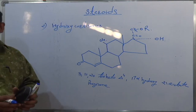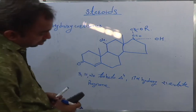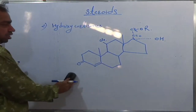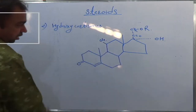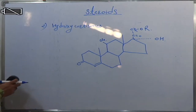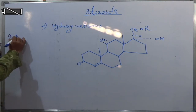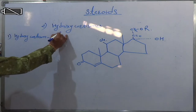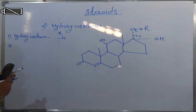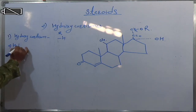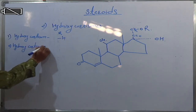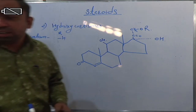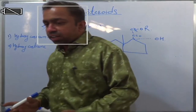This is cortisone or hydrocortisone. The name will be changed as per the R group. Example one: hydrocortisone where R is H. Example two: hydrocortisone acetate where R is the COCH3 bond.